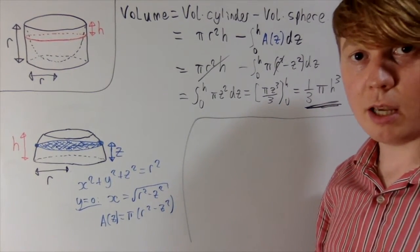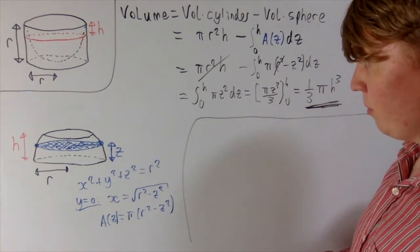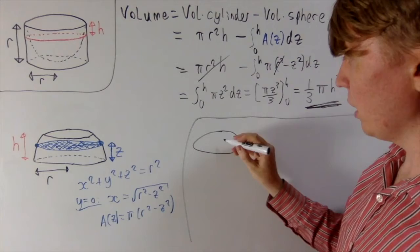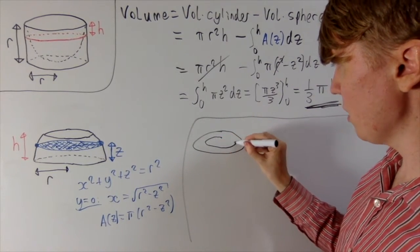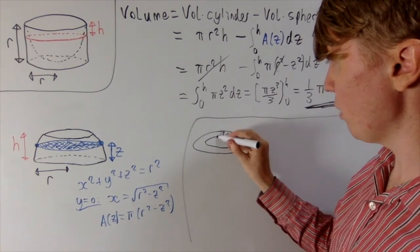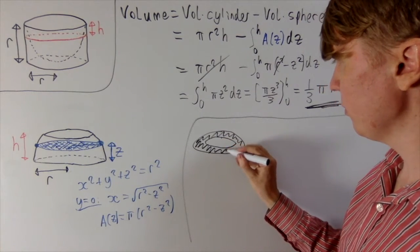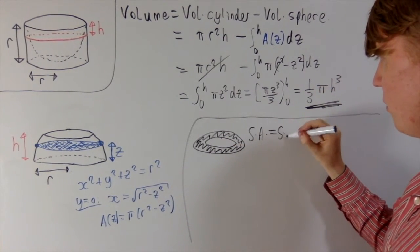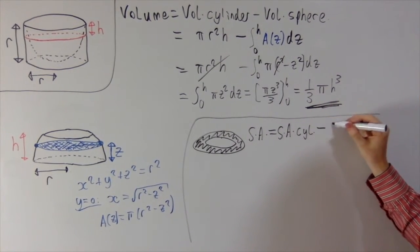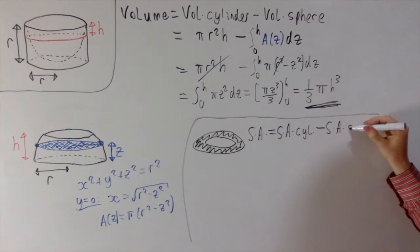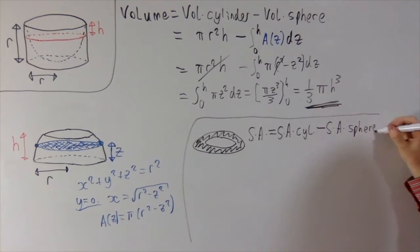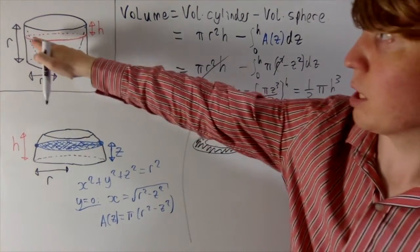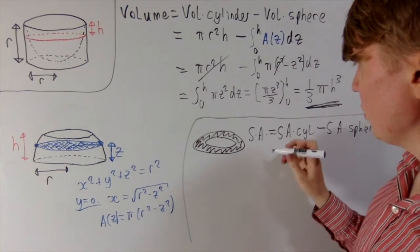And now we'll do the same sort of calculation for the surface area. So if you remember for the surface area of this sort of slice in the bowl here, we've basically got this annulus kind of shape, and we're interested in this shaded area here. So the surface area, just like we've done with the volume, this is the surface area from the cylinder minus the surface area from the sphere, the hemisphere.